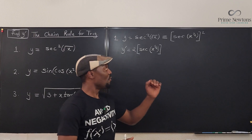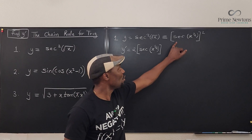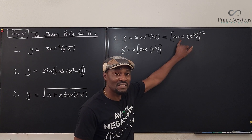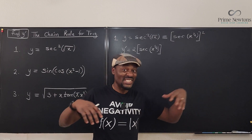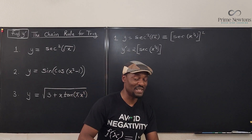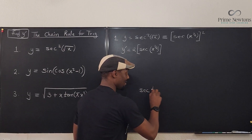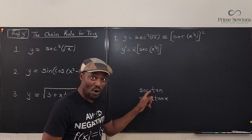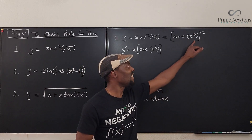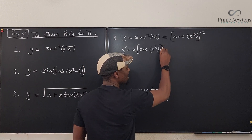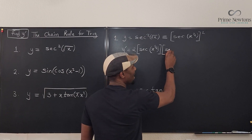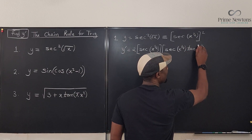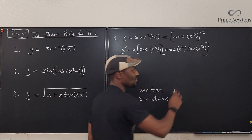Now let's go inside. When you go inside, you take it from the beginning — you're going to differentiate secant but you cannot touch the argument. The derivative of secant is secant of the argument times tangent of the argument. The argument of this function is x to the one half. So in your second move in the chain rule, it has to be multiplied by secant of x to the one half times tangent of x to the one half.